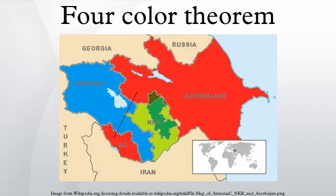Suppose V, E, and F are the number of vertices, edges, and regions. Since each region is triangular and each edge is shared by two regions, we have that 2E = 3F. This together with Euler's formula, V − E + F = 2, can be used to show that 6V − 2E = 12. Now, the degree of a vertex is the number of edges abutting it. Since 12 > 0 and (6 − i) ≤ 0 for all i ≥ 6, this demonstrates that there is at least one vertex of degree 5 or less.